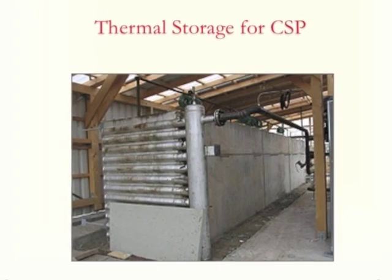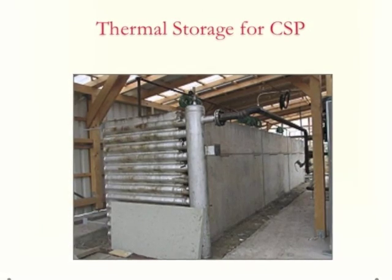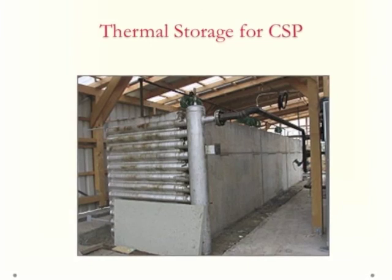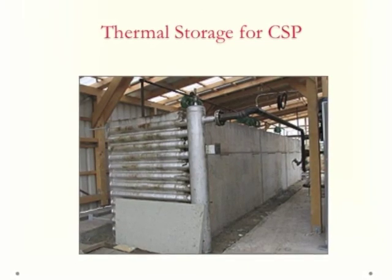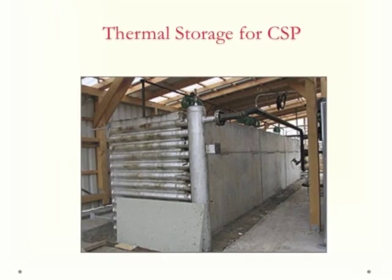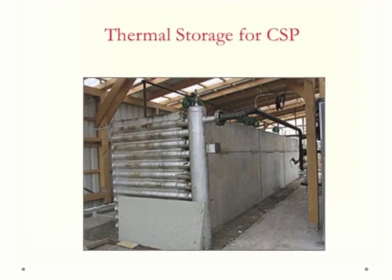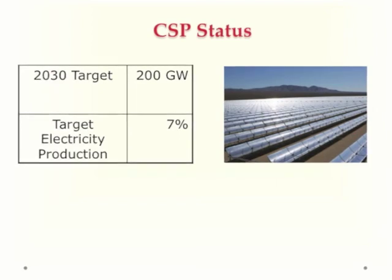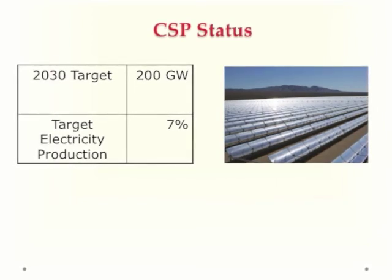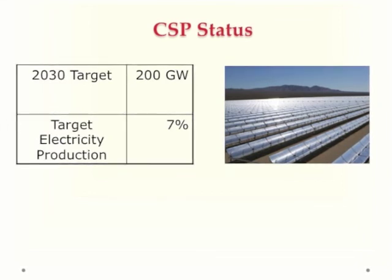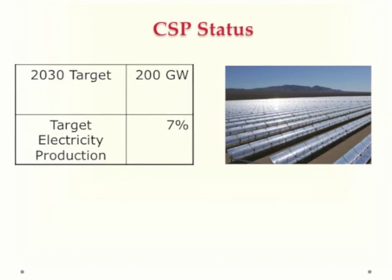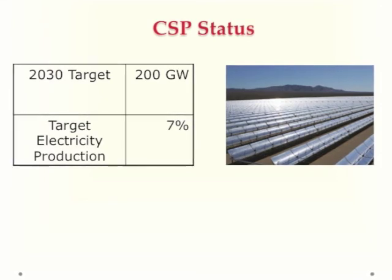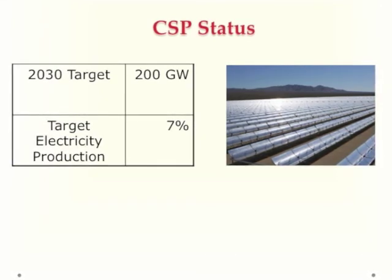Extremely important to the operation of a CSP system is thermal storage. Thermal storage is the energy generated during the day by solar energy, and that stored thermal energy can be used at night to produce steam and generate electricity. This means a CSP plant can operate well beyond daylight hours. CSP is a new technology, and the 2030 targets are 200 gigawatts of CSP — equivalent to 200 nuclear power plants — producing about 7% of the electricity needed by the United States.